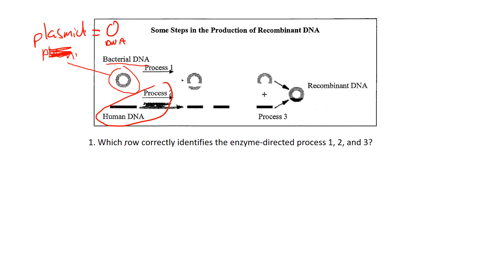What's happening here is they're taking a gene from the human, removing it, and splicing it into the circular bacterial DNA. That is recombinant DNA. They want to know what's happening at process one, two, and three, so let's take a look at the options.